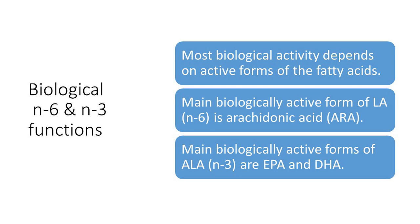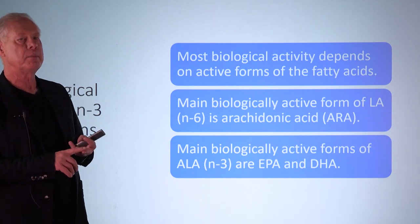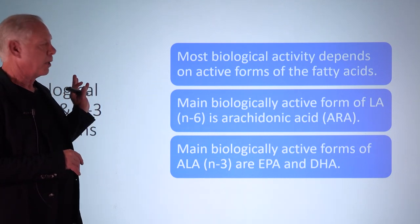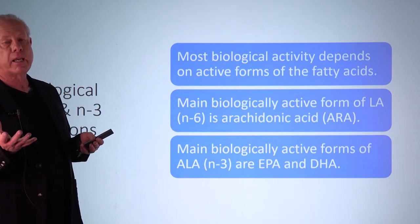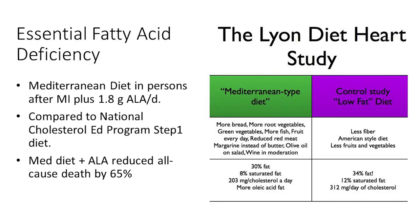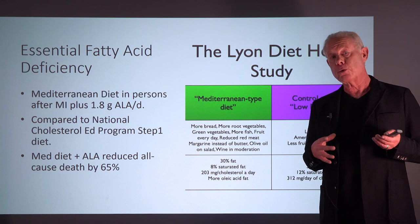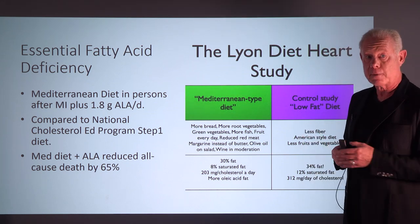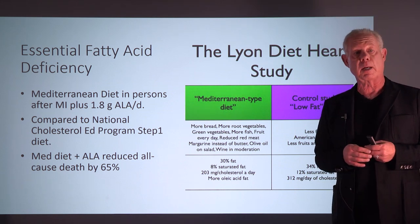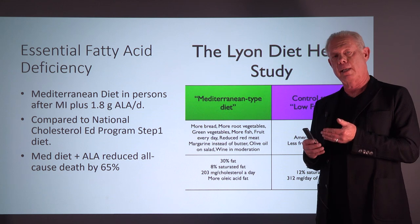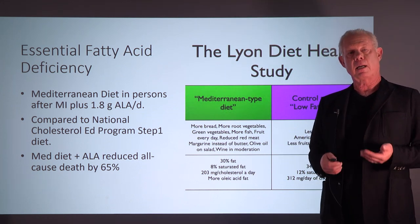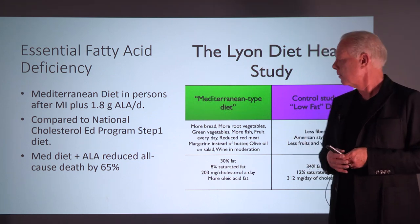Biologically, N6 and N3 activity depends on the active forms — arachidonic acid, EPA, and DHA. The parent forms are really only involved with membranes and as a source of energy. We learned about the importance of these fatty acids through the Lyon Heart Study, where they took a Mediterranean diet and added ALA to it, comparing it to the National Cholesterol Education Program diet. The Mediterranean diet with ALA had a 65% reduction in cause of death — very significant and encouraging.